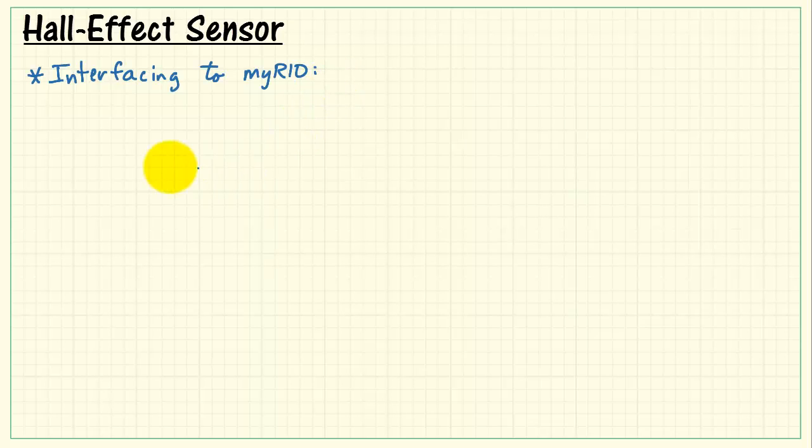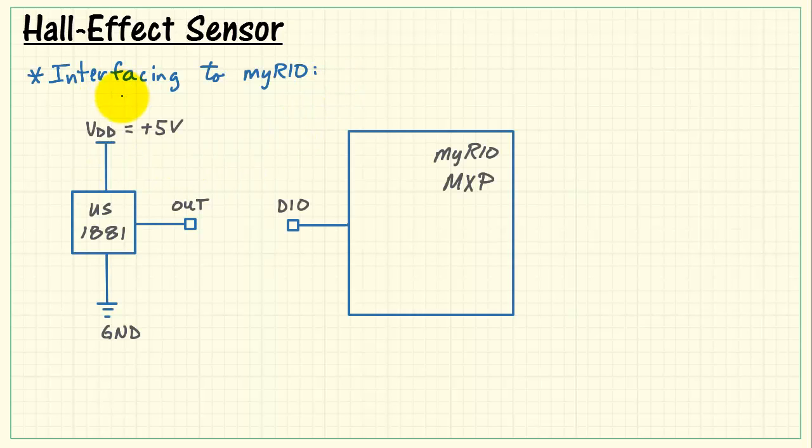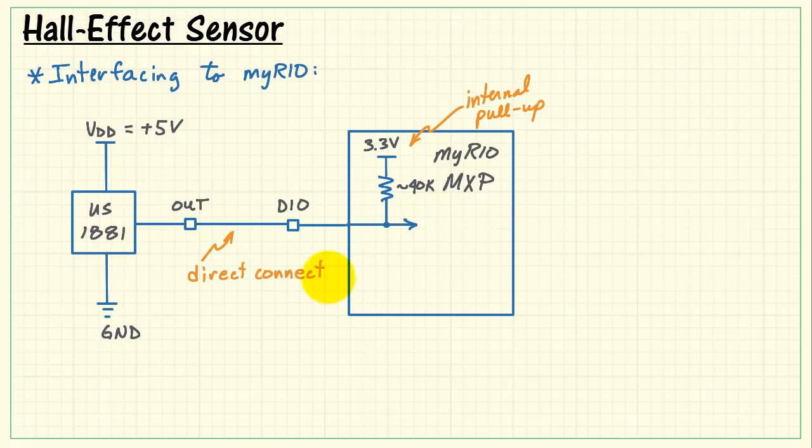All right, now that we have some idea about the hall effect sensor itself, let's take a look at how we can interface it to MyRio. As I mentioned earlier, we need to use the 5 volt supply for the US1881. And to begin with, let's look at interfacing to the MXP connector. The digital input has a pull-up of about 40k to 3.3 volts. That means we can simply do a direct connection from our sensor to the DIO. Fairly easy and simple. But the only thing remaining is the 0.1 microfarad power supply bypass capacitor, which is recommended in the data sheet for the US1881.